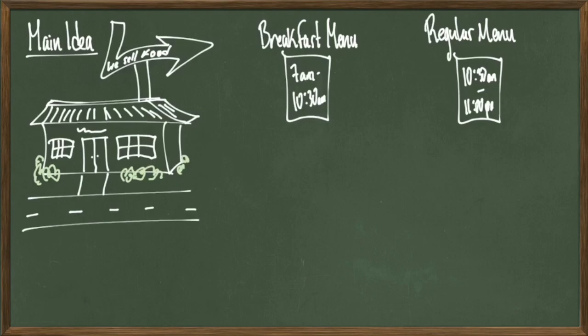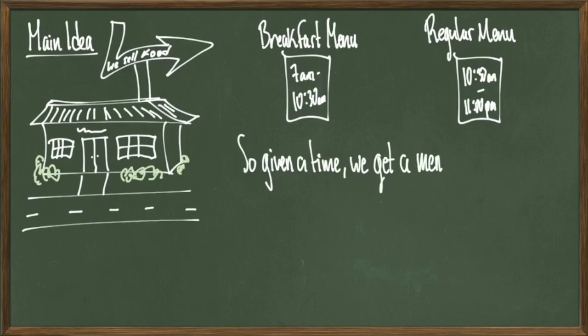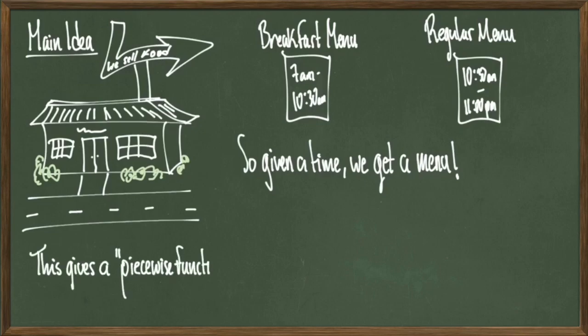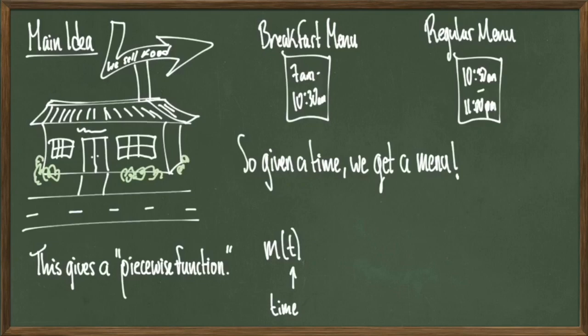So let's try to translate this concept into a function. The idea is our time, or the time of day that we enter the restaurant, will be our input to the function, and then the output will be whatever menu we get based on what time we entered. We're going to let m represent this function, where t represents our time and m stands for menu. So the idea again is that I input a time to this function, and I output a menu — either a breakfast menu or a regular menu.